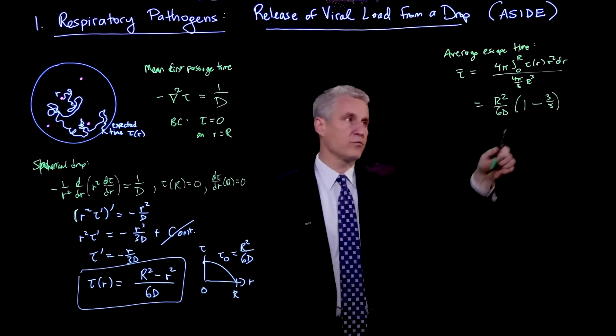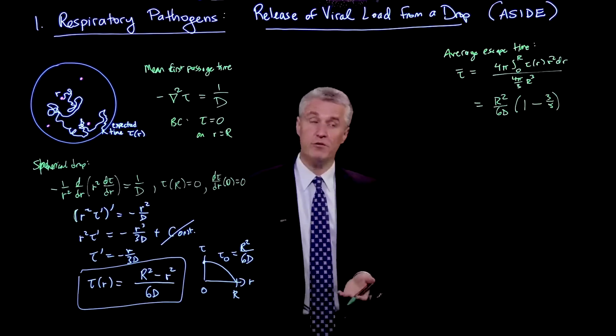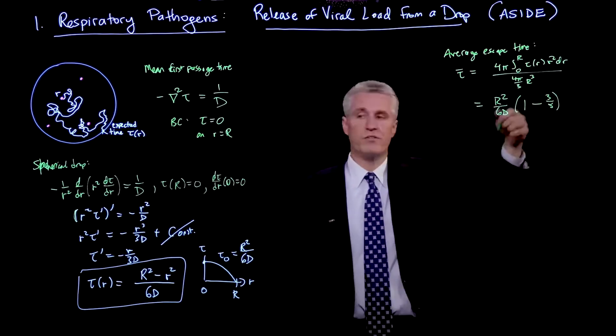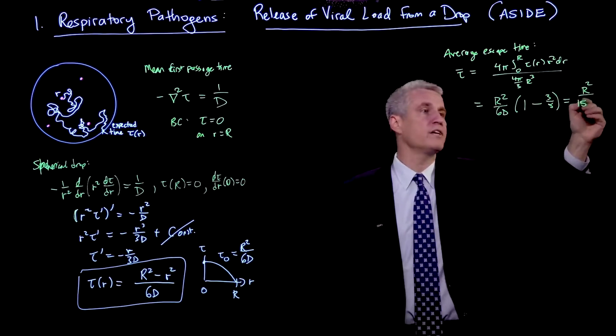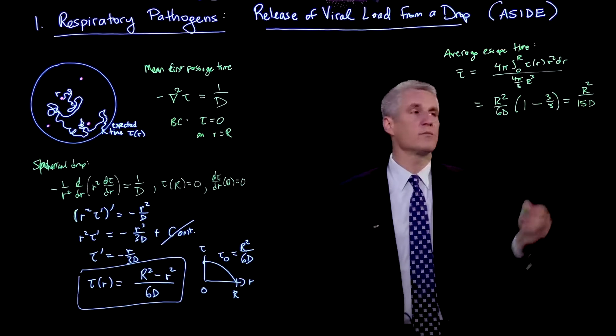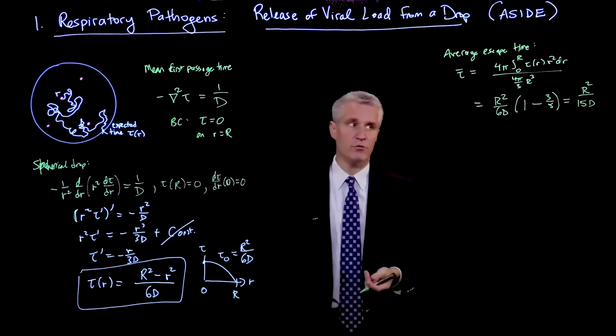And so that gives, when I subtract 1 minus 3 fifths, I get 2 fifths. And 2 over 6 is 1 third. And so this ends up being r squared over 15d, as we had previously quoted.